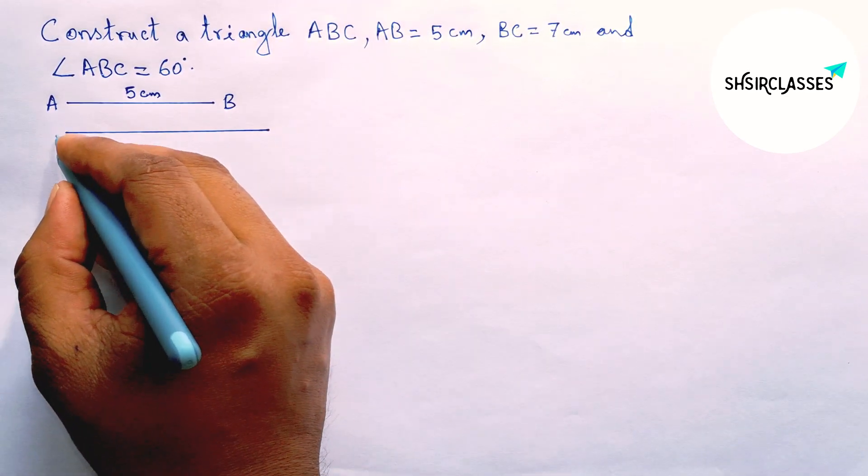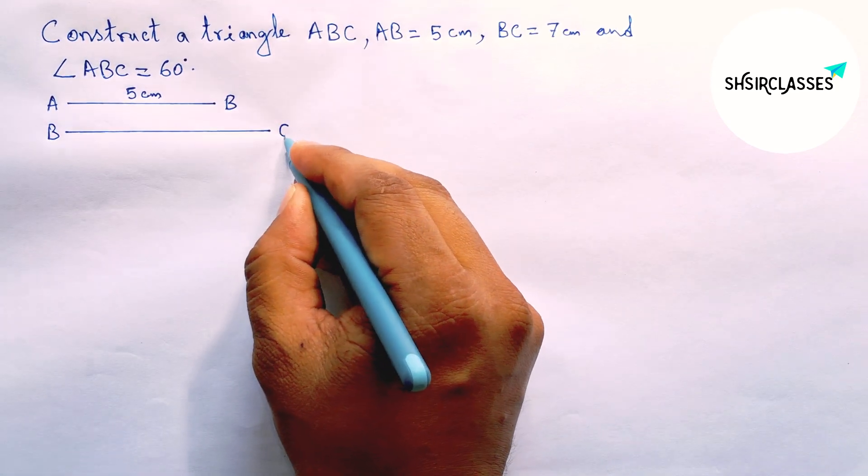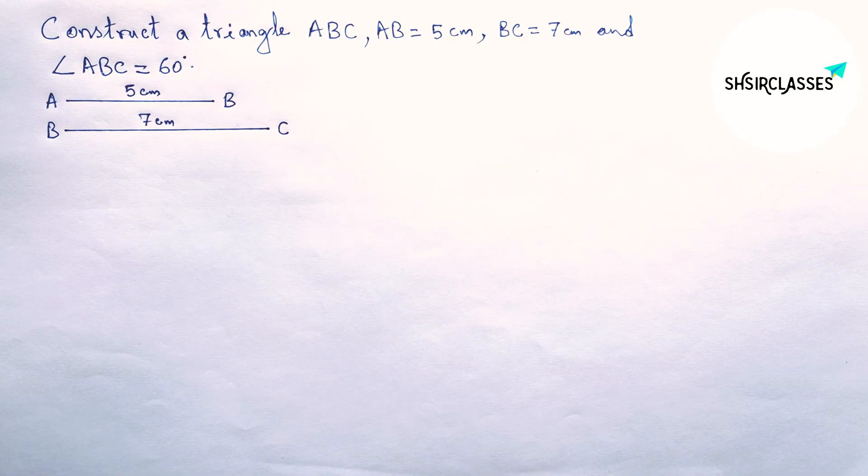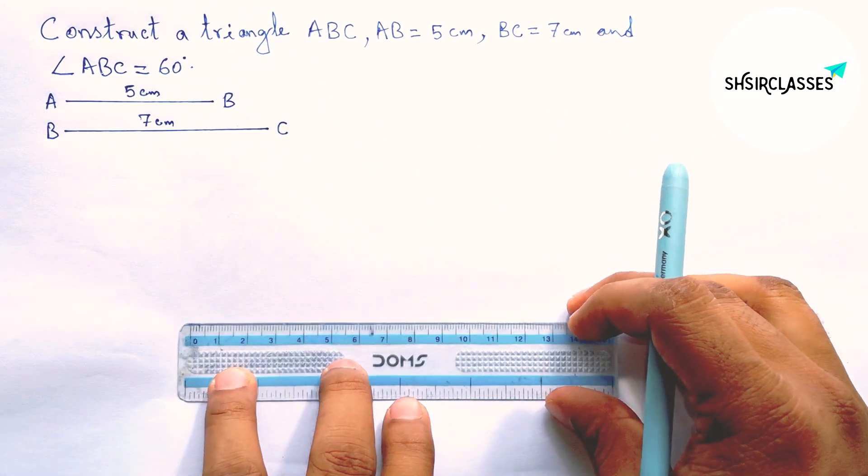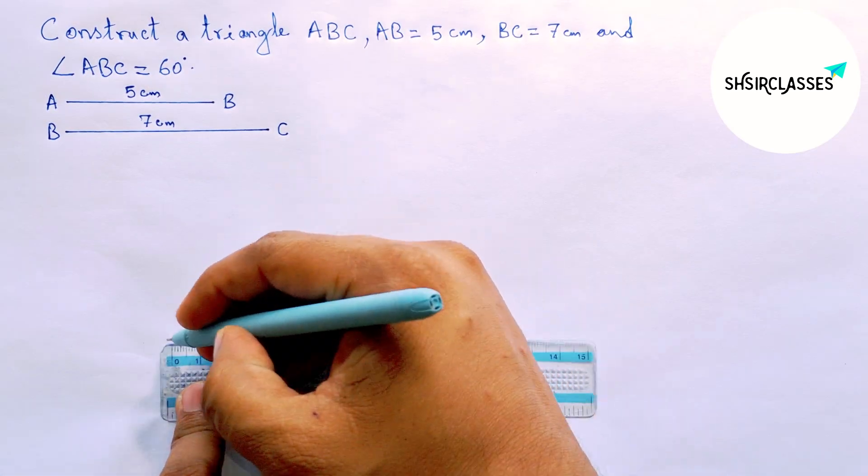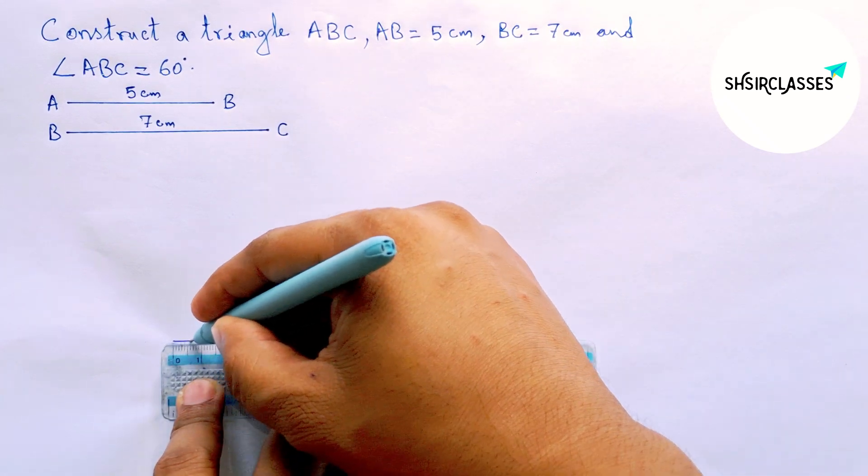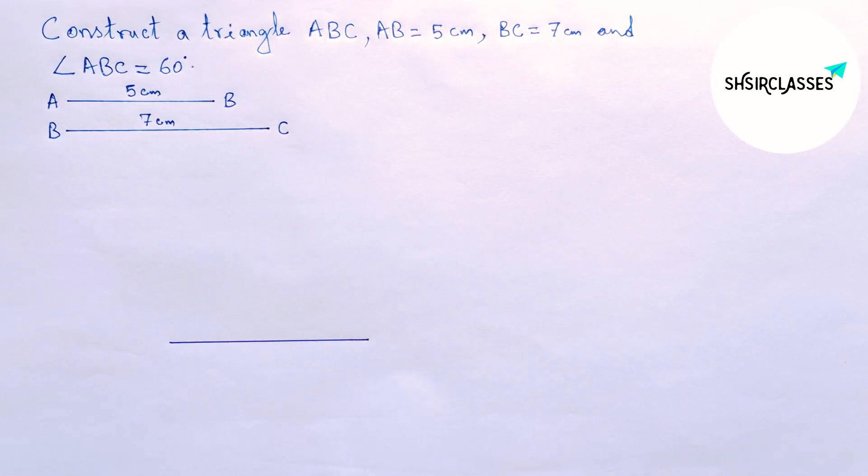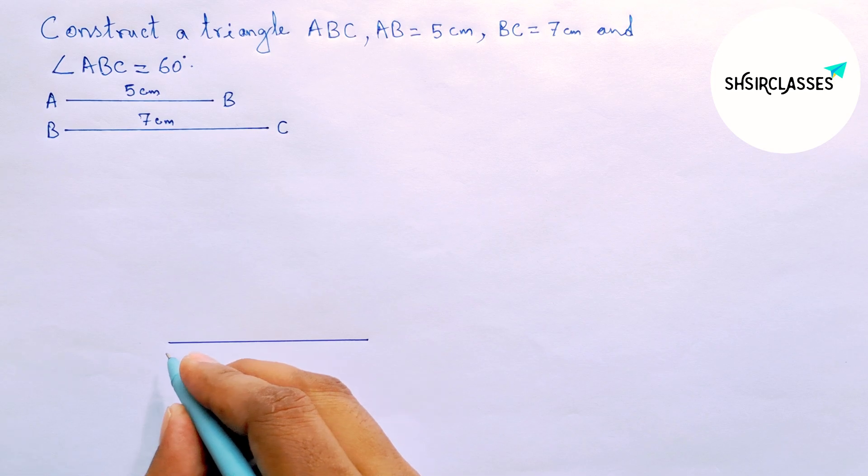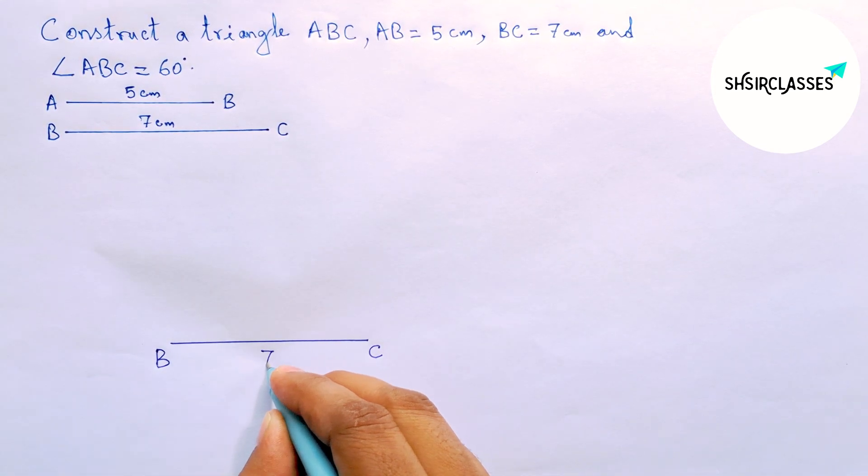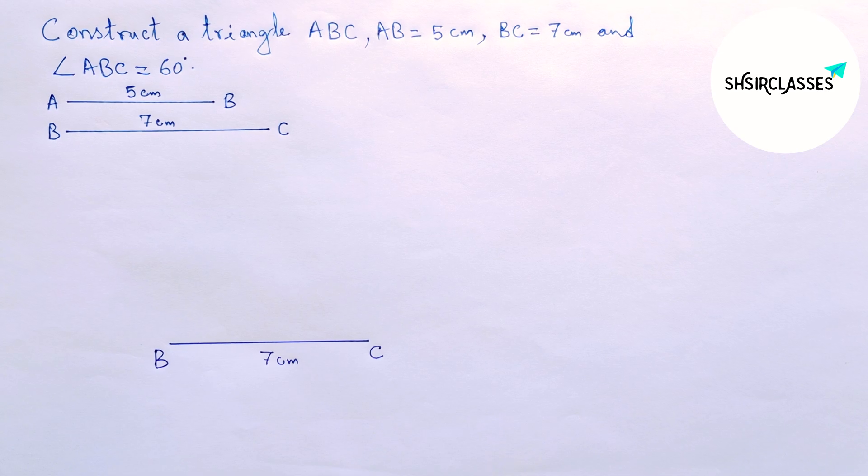5 centimeters, and this one BC, 7 centimeters. Now again drawing a line segment of length 7 centimeters. This is a 7 centimeter line segment, labeling here B and C, so BC equals 7 centimeters.